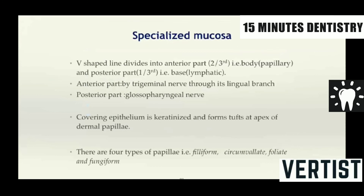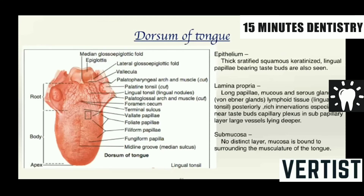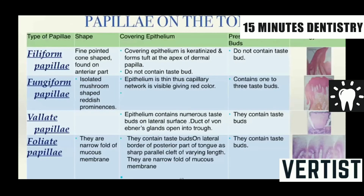Specialized mucosa includes the tongue and the taste buds. The histological structure of the tongue has stratified squamous keratinized epithelium, numerous lingual papillae bearing taste buds, and lamina propria consisting of long papillae. Mucous and serous glands can be seen here. There is no distinct submucosa layer but the mucosa is bound to the surrounding intrinsic musculature of the tongue.